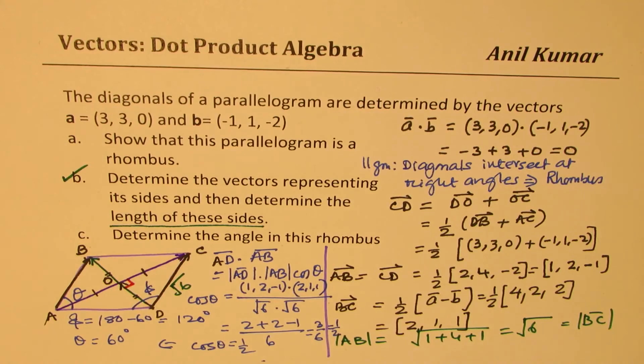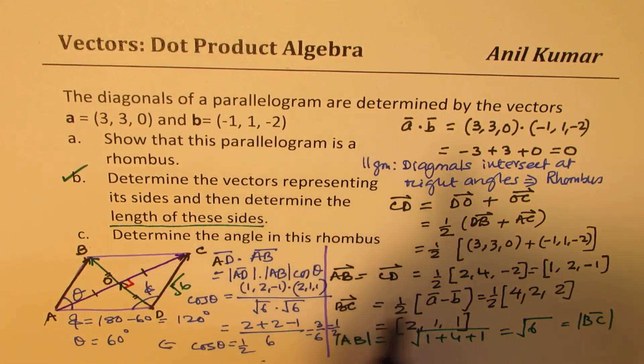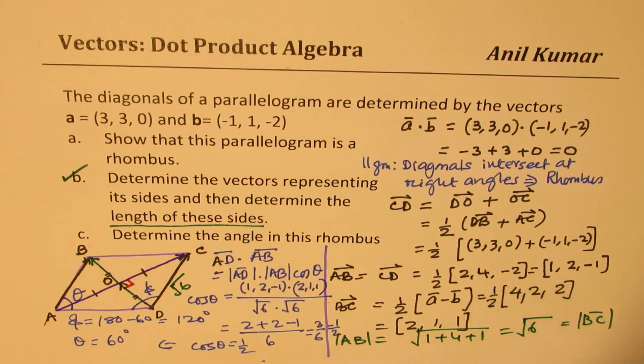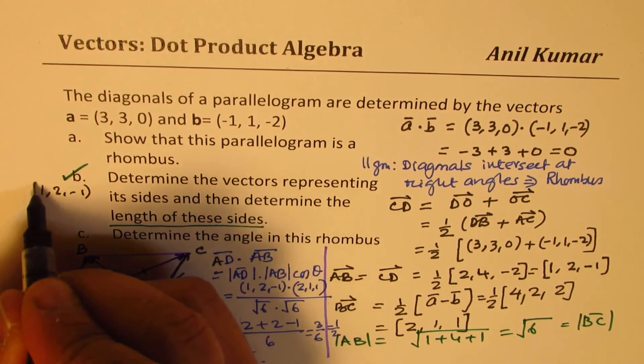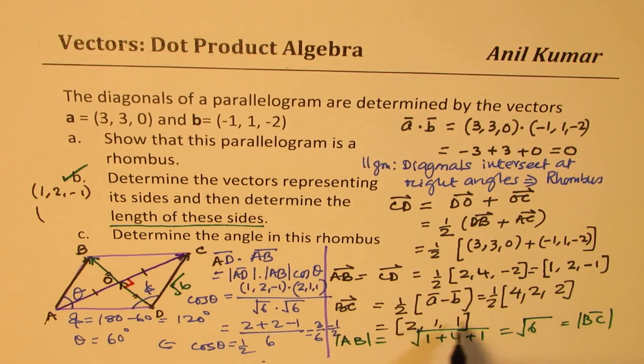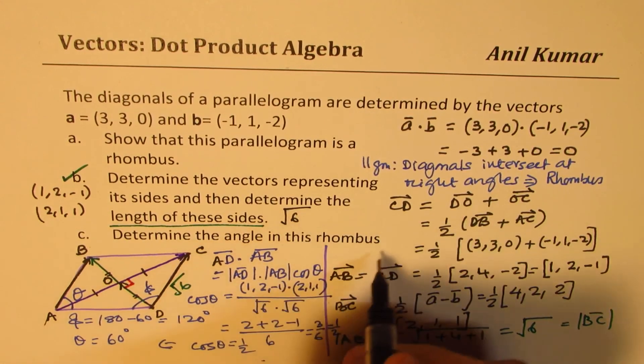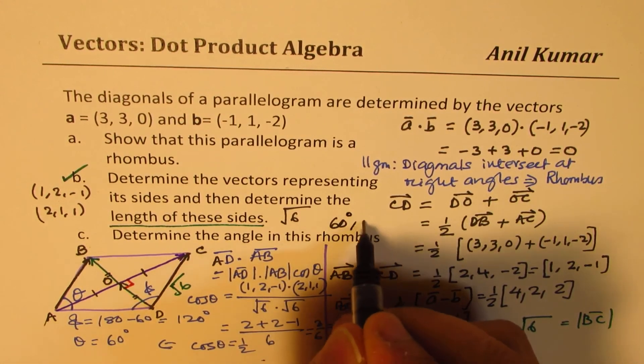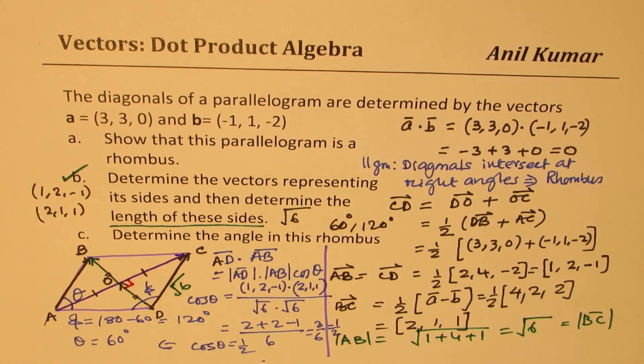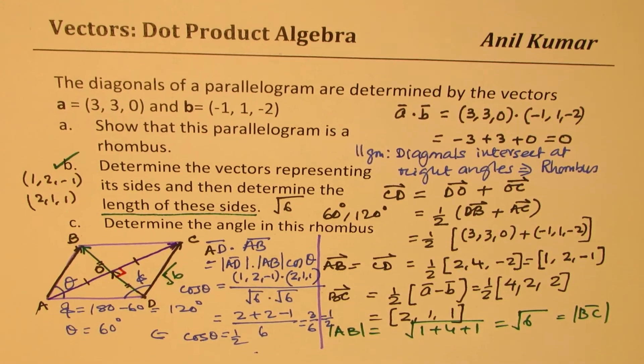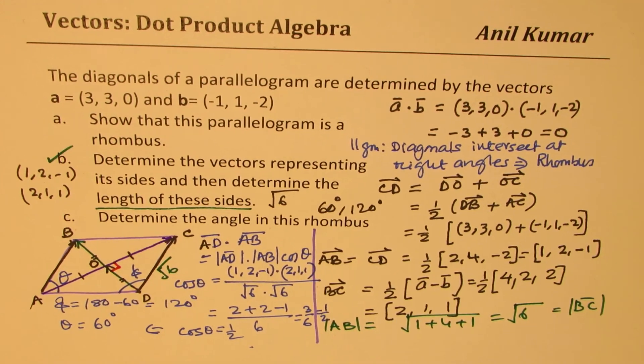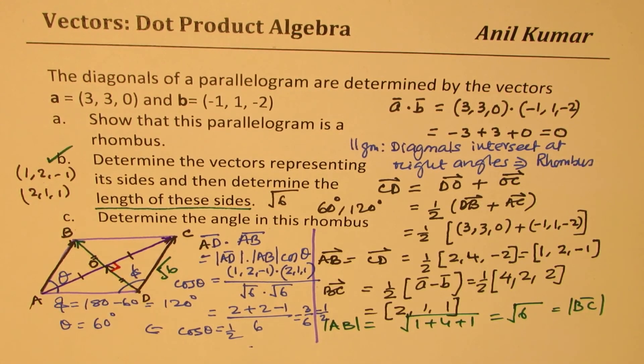So that is how we get these angles. So what we got here is that the vectors are 1, 2, minus 1, and 2, 1, 1. The length is square root of 6. The angles are 60 degrees and 120 degrees. So that becomes the solution for the given question. I hope it is understandable. I kind of squeezed in a lot of material here. But I hope it is clear. Feel free to write your comments and share your views. And if you like and subscribe to my videos, that would be great. Thanks for watching and all the best.